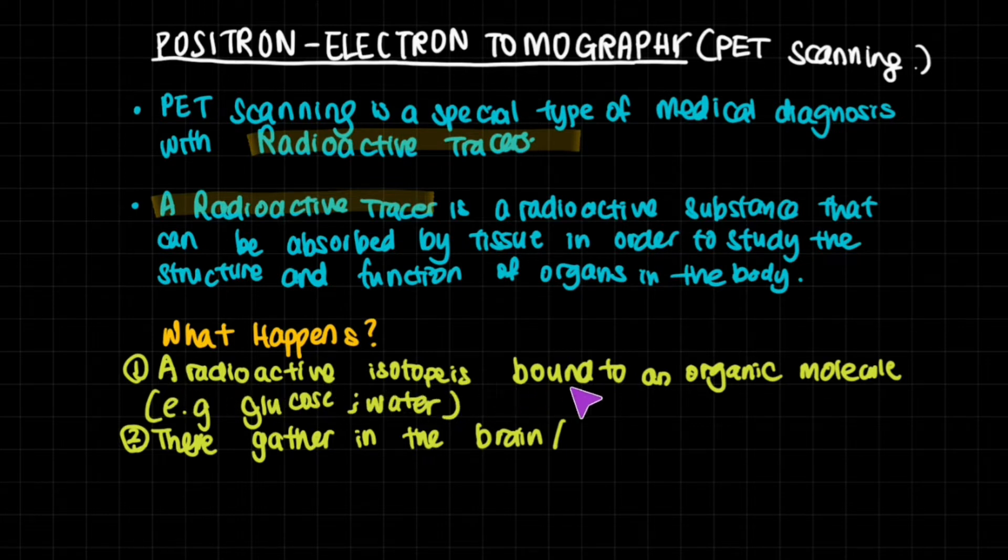So what happens? A radioactive isotope is bound to an organic molecule, for instance, glucose or water. This is something that already exists in our body, so it will know where to go. They will gather in the brain or other places that you want to scan, places where you fear that you might have a cancerous tissue growing.